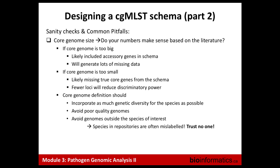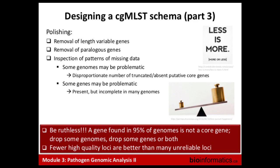A common pitfall is that some designs attempt to merge species, which complicates results because they're different species for a reason and may not share much of the core genome, even if they fall into the same genus — this can end up breaking the scheme. Once you've designed the scheme, you have to polish things up: removing variable genes, paralogous genes, and making sure everything makes sense and there aren't any issues that got past the initial quality filtering.